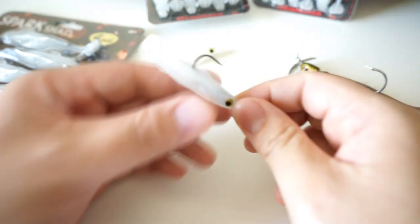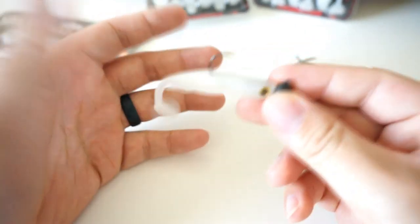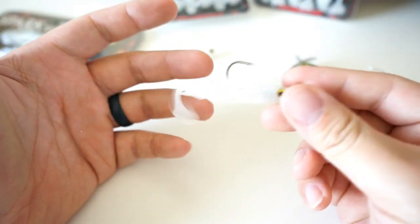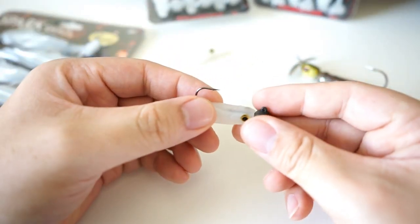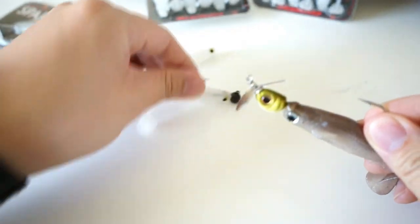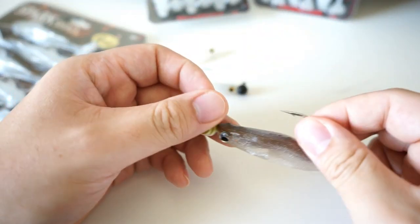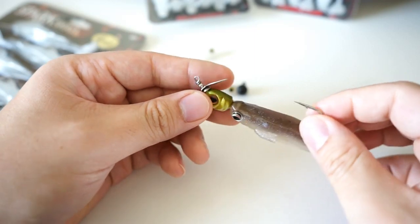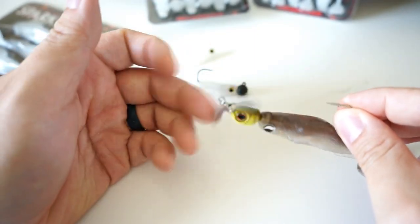Basically, just a simple ball head and a swimbait. When I'm fishing it on the ball head, basically what I'm doing is making a long cast and letting this sink all the way to the bottom, pop it up, and then basically do a slow retrieve back to the boat.